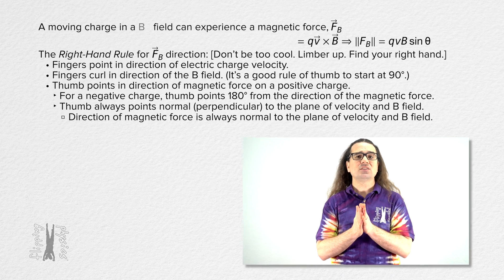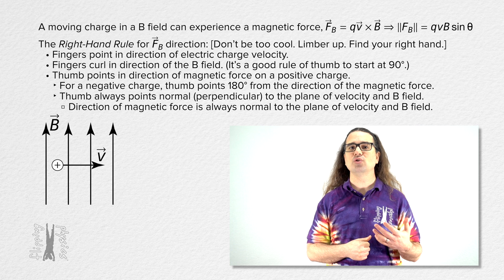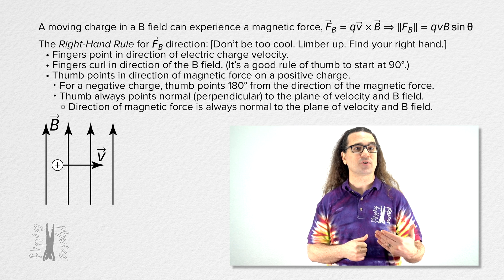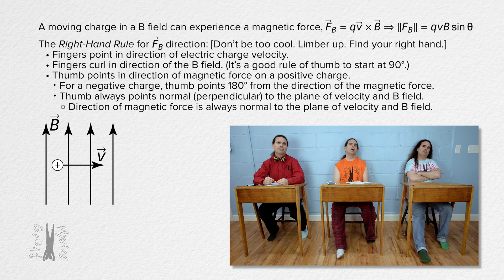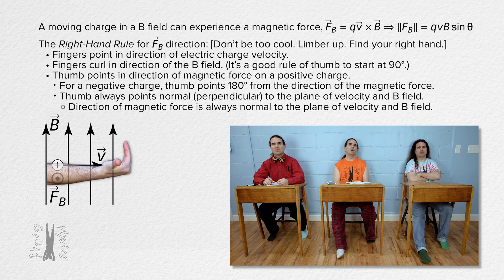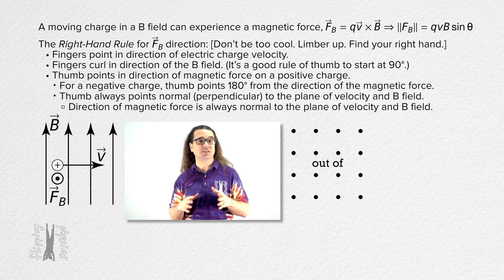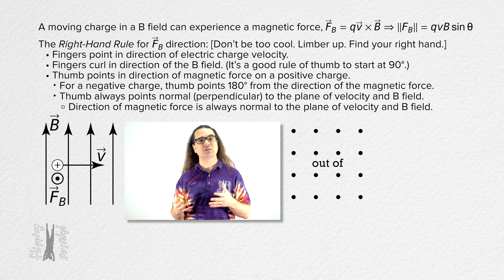Let's start with a positive charge which has a velocity to the right and is passing through a uniform magnetic field which is oriented upwards. Beau, please walk us through the right hand rule to find the magnetic force acting on this charge. Fingers of the right hand point to the right, curl fingers of the right hand up — this time it is exactly 90 degrees — thumb points out of the screen, so the magnetic force is out of the screen. The symbol for out of the screen is a dot, and this is what a uniform field out of the screen looks like.